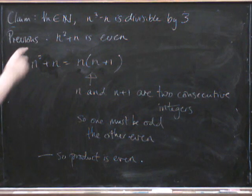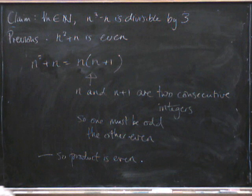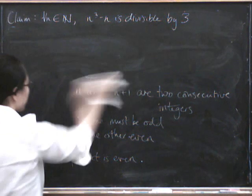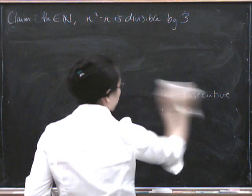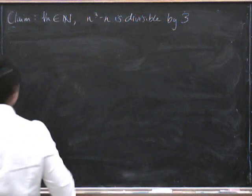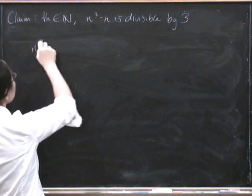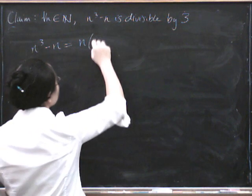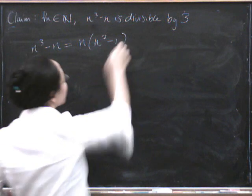Now we can do something similar for this first one as well. Let's see what we can do to the first one. What is n cubed minus n? Well, if we take the n factor out, we get n squared minus 1.